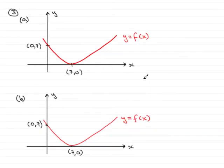In this question, we are given the graph of y equals f of x. I've drawn it in parts a and b. It's a curve with a minimum point at (7, 0) and it crosses the y-axis at (0, 7).